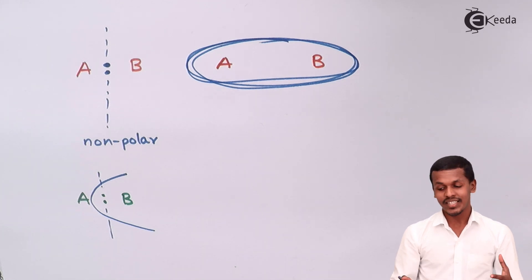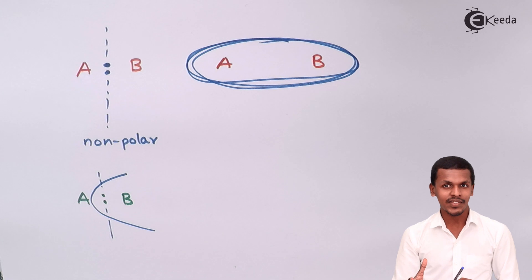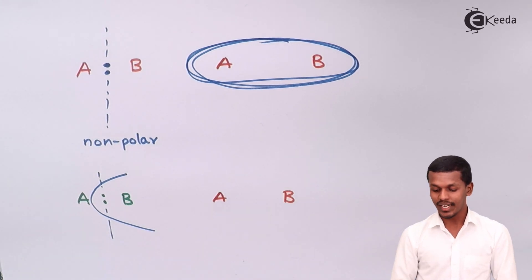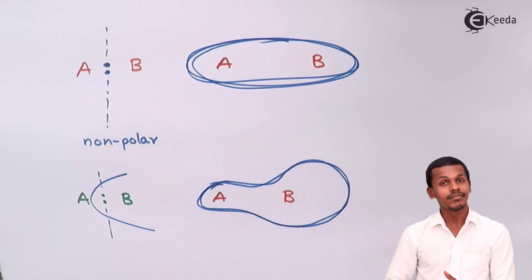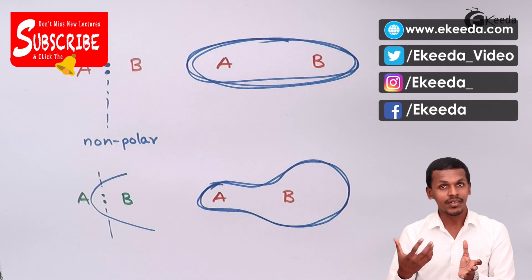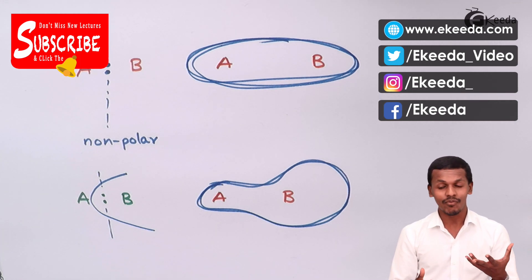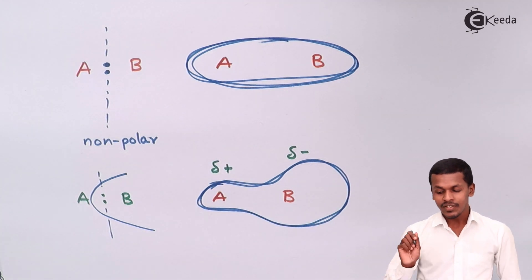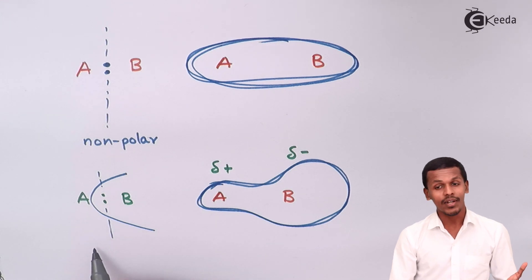When B is more electronegative, the charge density is no longer similar to that of the non-polar case. B acquires the shared electrons toward itself, causing a distortion of the charge density. The charge density becomes greater on the B side. Because the charge is concentrated more on B, there is a difference — a partial negative charge on B and a partial positive charge on A. This gives rise to polarity, and molecule AB is now called a polar molecule.